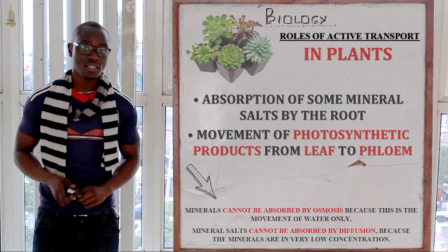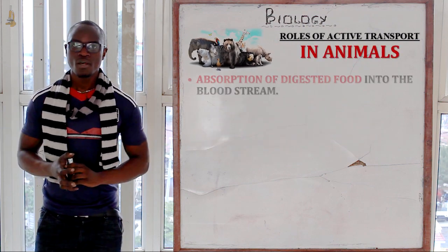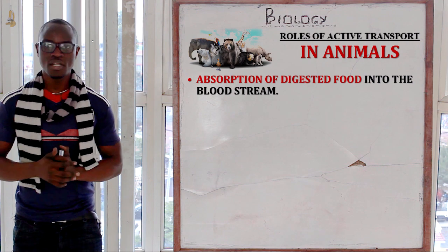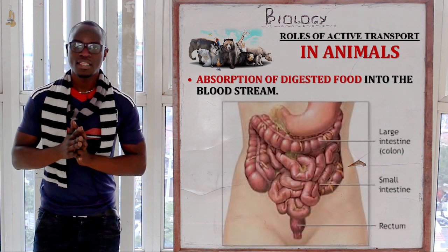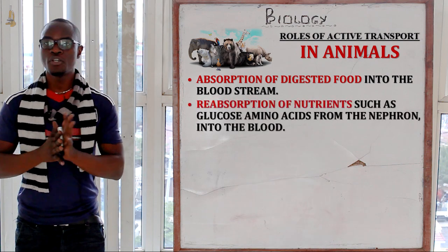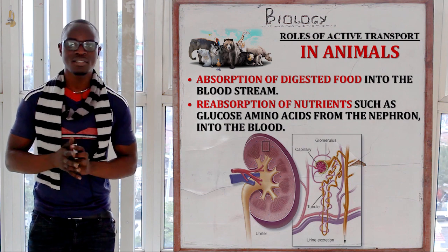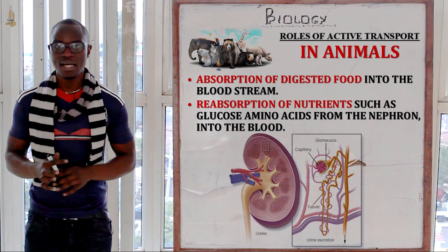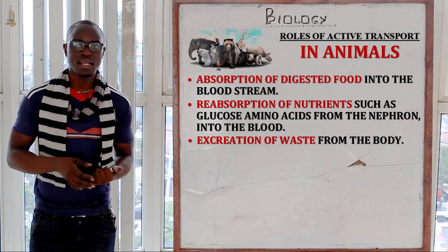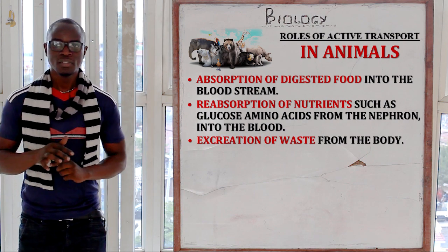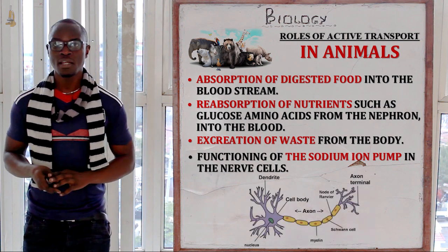Now let's look at the roles of active transport in animals. We have absorption of digested food from the ileum to the blood through active transport. Next, we have reabsorption of nutrients — for example, glucose and amino acids — from the kidney to the bloodstream. Then we have excretion of waste products from the cell, which also occurs through active transport.